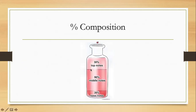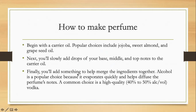So if you want to make your own perfume at home, make sure you follow the percentage composition: 20% for base note, 50% for middle note, and 30% for the top note. So the middle note constitutes the highest percentage in terms of volume.